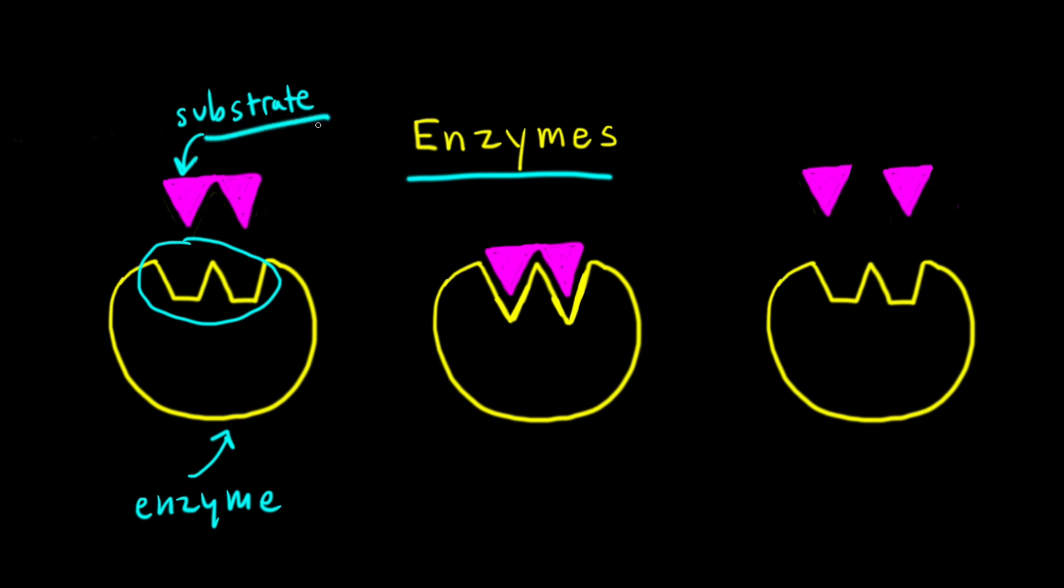In the next step, the substrate binds to the enzyme at the active site. And when the substrate binds, the substrate can produce changes in the shape of the active site that allow for better binding. So on the left here, we can see how the shape of the active site changes slightly when the substrate binds to it. This formation of the enzyme substrate complex is called the induced fit model.